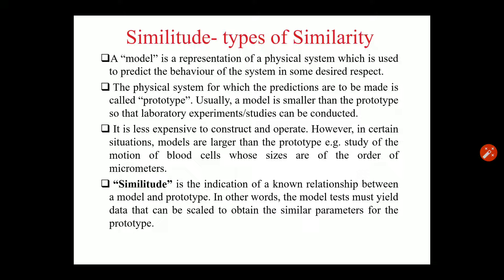Similitude is the indication of a known relationship between a model and prototype. In other words, the model test must yield data that can be scaled to obtain similar parameters for the prototype. The similitude means that after we have made the model and obtained test results, those results should be applicable to solve the prototype. The data should be applicable to the real world prototype, and validation of the data is very important. Whatever we predict or simulate using the model, the simulation must be valid in the real world.